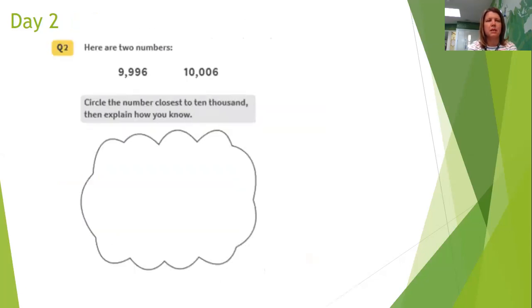Here are two numbers, 9,996 and 10,006. Circle the number closest to 10,000, then explain how you know.